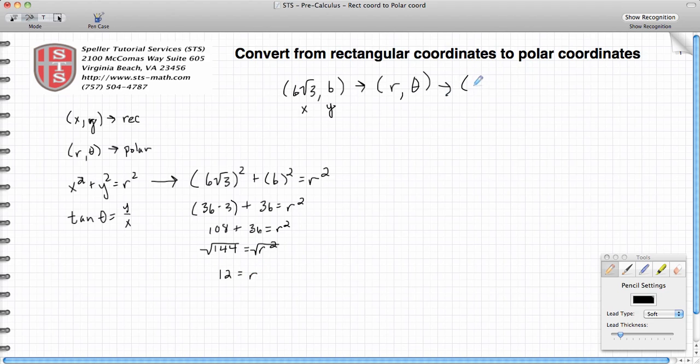So we have one of the numbers that we need for our polar coordinate, so we know the radius is 12. Now we need to find out what θ is. The relationship to find θ is going to be the y value over the x value, so let's write this here.